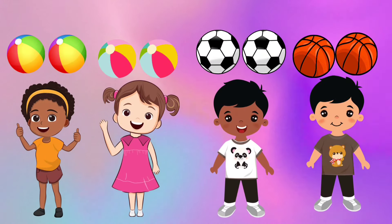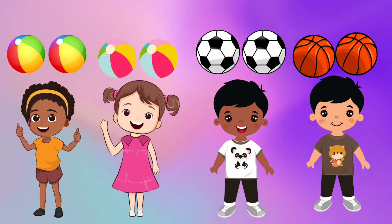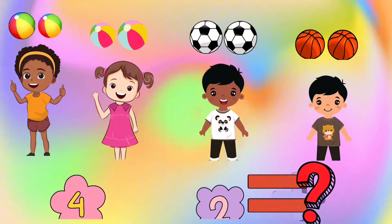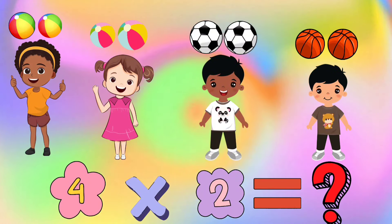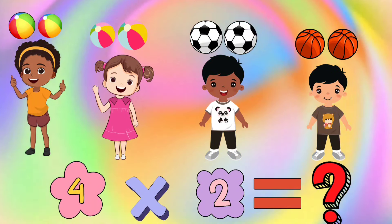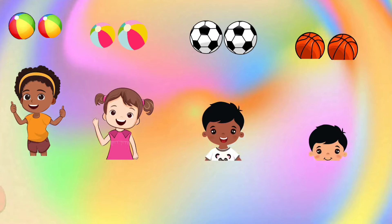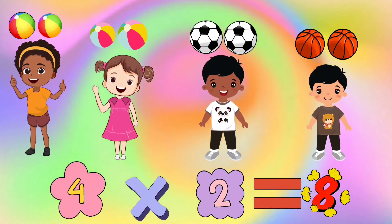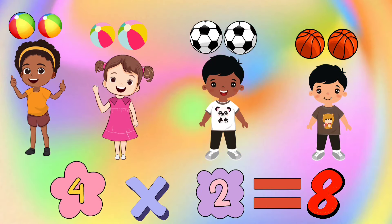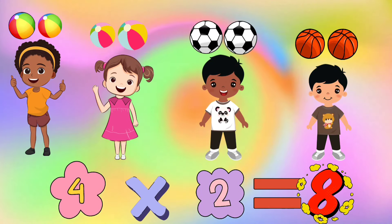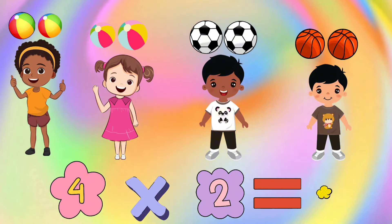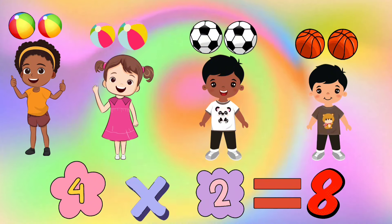Let's multiply four by two. Think of four groups of two balls each. How many balls do we have? Four times two equals eight balls. You are doing great!